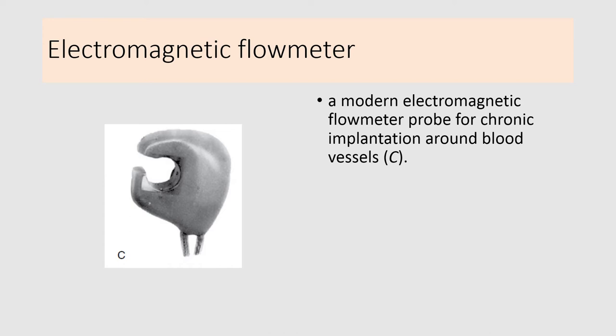Because the electromagnetic flow meter is an invasive procedure, it can produce hemorrhage and infection, so we avoid it in human subjects. In humans, we record cardiac output using various indirect, less invasive methods.